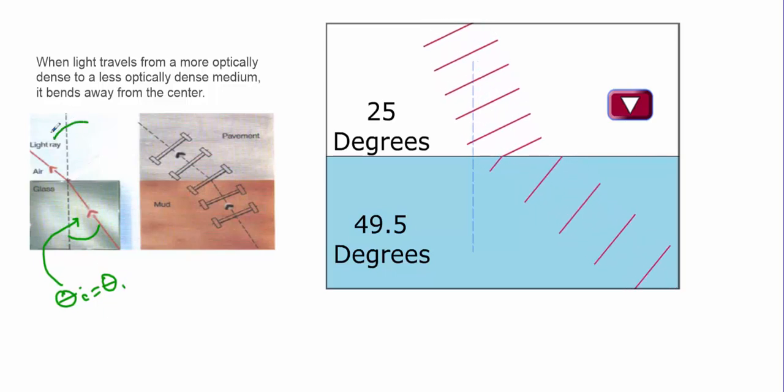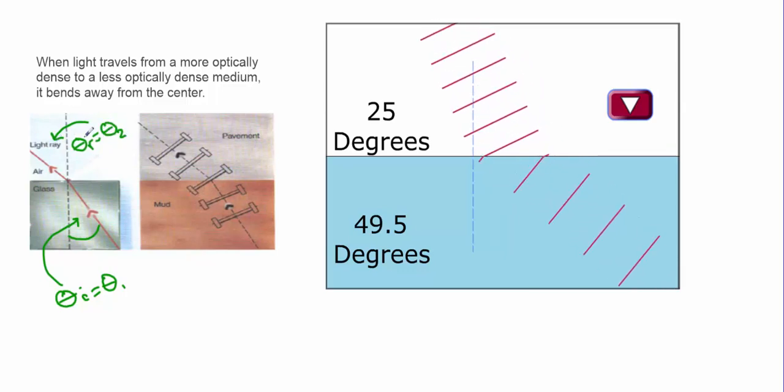And then my refracted angle, which might be theta r, we'll call theta 2. And in this example, theta 2 is going to be bigger than theta 1.